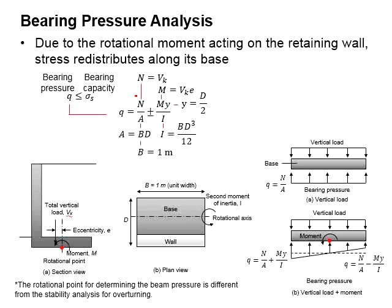The N here represents the total vertical load acting on the retaining wall. The A here is the effective contact surface area between the wall base and the soil.